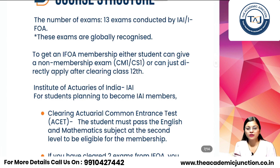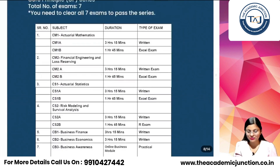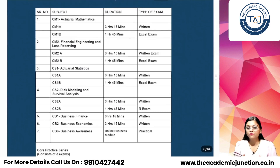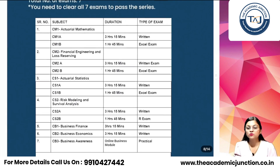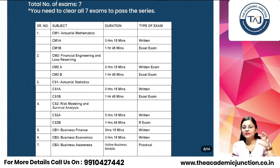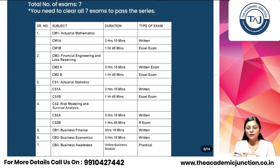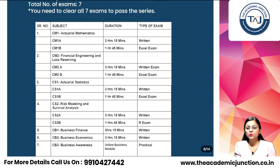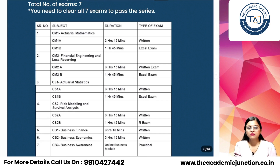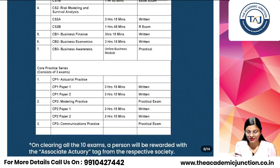There are 13 exams divided into different series. The first series is the Core Principles series, which has 7 exams: CM1, CM2, CS1, CS2, CB1, CB2, and CB3. These cover actuarial maths, financial engineering and loss reserving, actuarial stats, risk modeling, business finance, business economics, and business awareness. Business awareness is a practical exam; the rest are application-based exams.